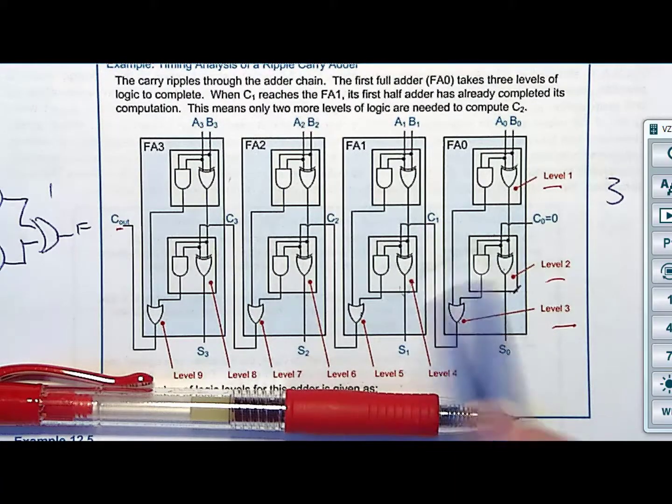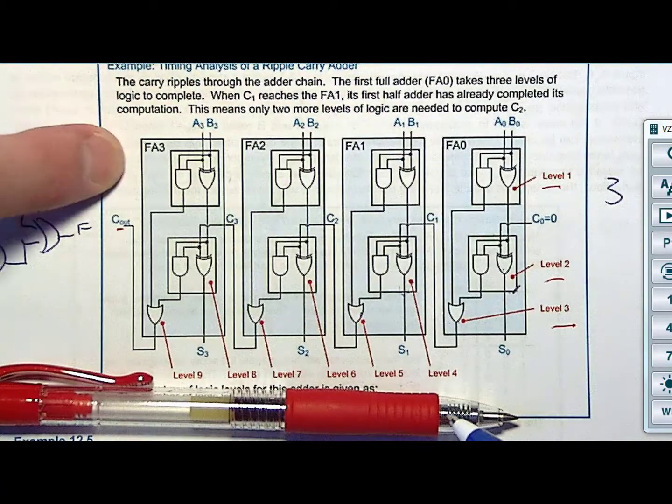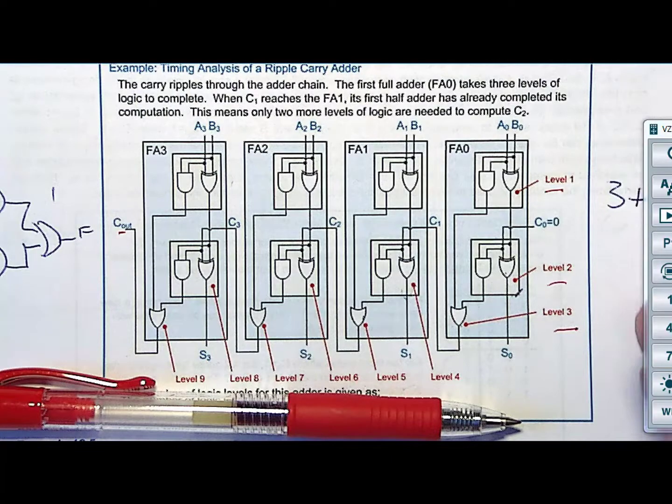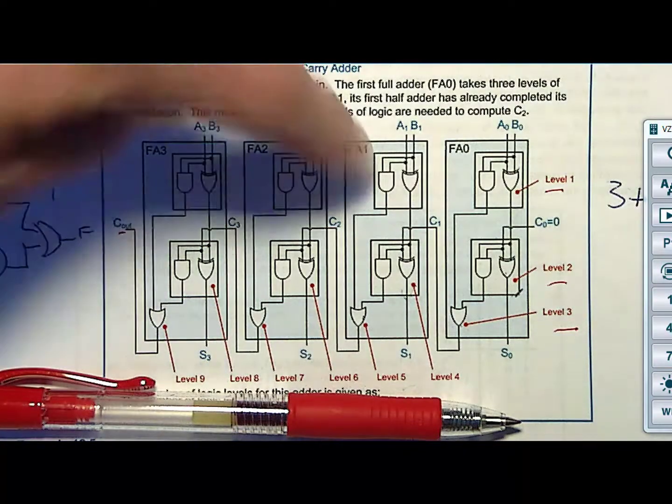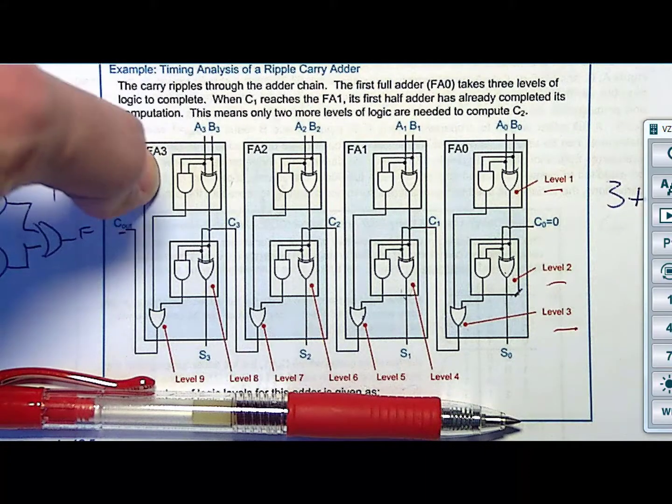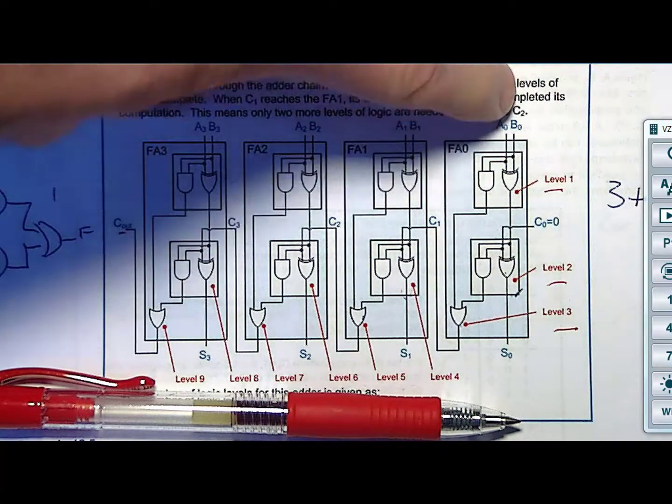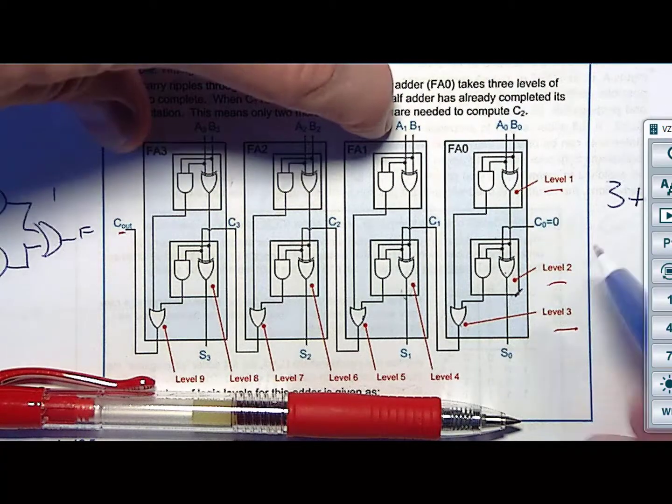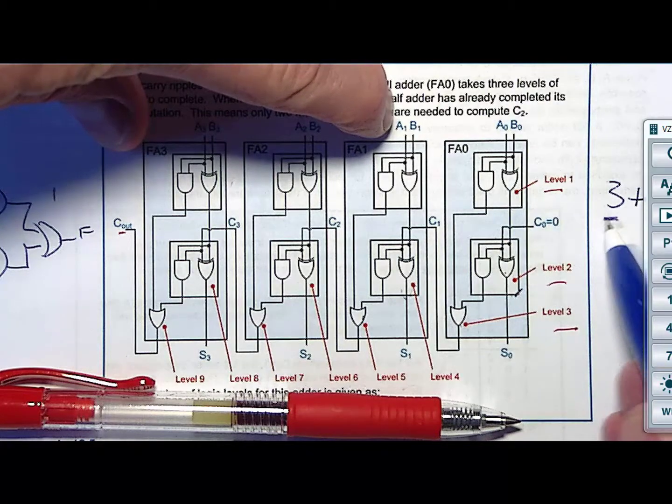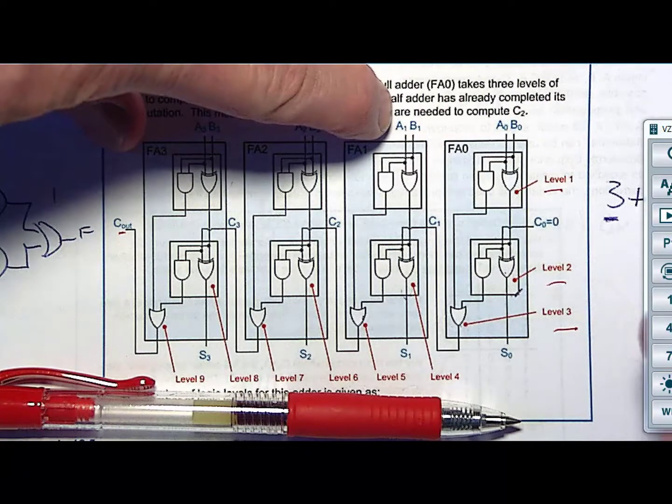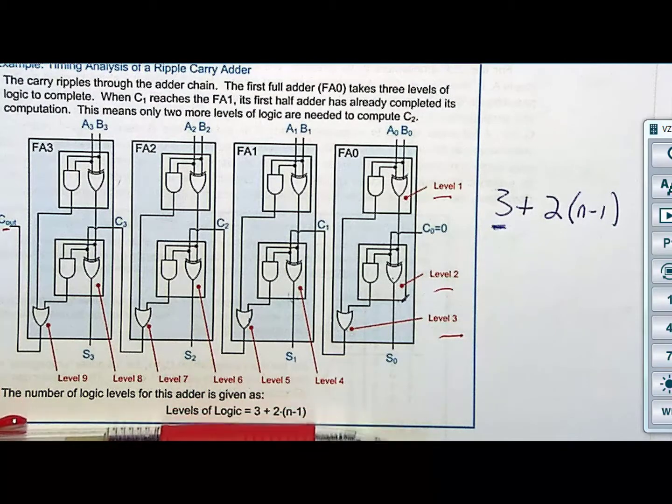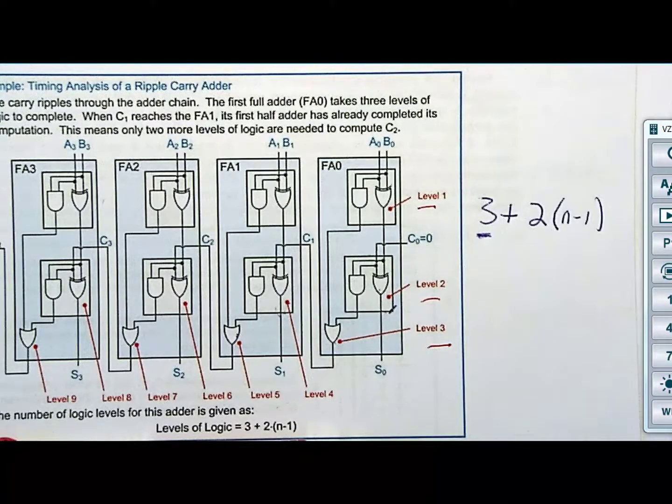But then how many levels of logic did each subsequent full adder add? It only did two, right? So because these guys computed immediately and they had their outputs ready. So really what you have is you're going to say plus two levels for each other position. So it's not, if I had an n-bit adder, which n would be equal to four, it's not going to be multiplied by four, is it? It's going to be four minus one because we already accounted for position zero. So what we would do is we multiply this by n minus one. Is that, oh, how's that feel?